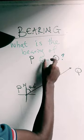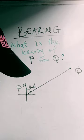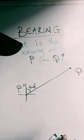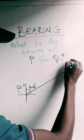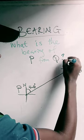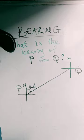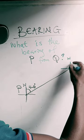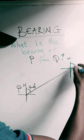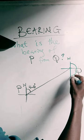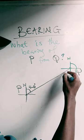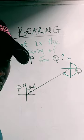Come to Q, place your cardinal point, and then you move from the north in a clockwise direction till you get to the line connecting P and Q.